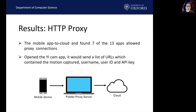Research question three: do IoT device mobile applications use encryption when sending and receiving information? For mobile app to cloud communication, we found seven of the 13 apps allowed a proxy connection, while the rest used certificate pinning. We found that when we opened the WiCam mobile app, it would send a list of URLs which contained the motion captured, the username, user ID, and API key.